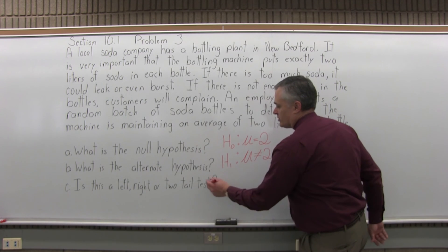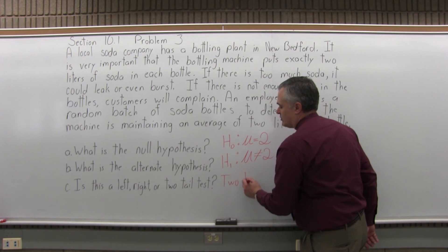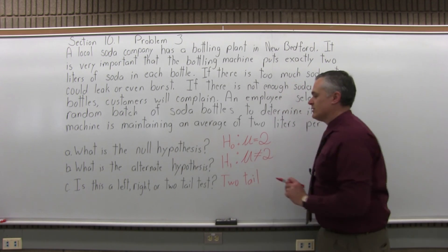When you have not equal to, is this a left tail, right tail, or 2-tail test? The type of test, this is a 2-tail hypothesis test for the not equal to.